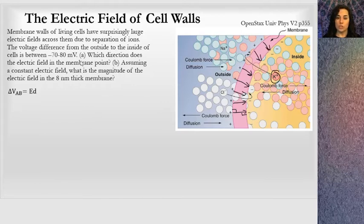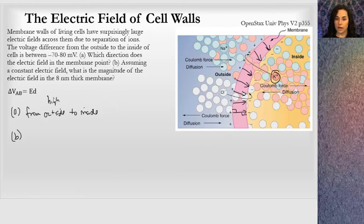When it says, which direction does it point, we're going to say from the outside to the inside. That would be the direction of the E field. We also know that the electric field points from high to low potential. So the outside is going to be the high potential and the inside is going to be the low potential. That makes sense because we're losing this potential. The inside is lower than the outside.